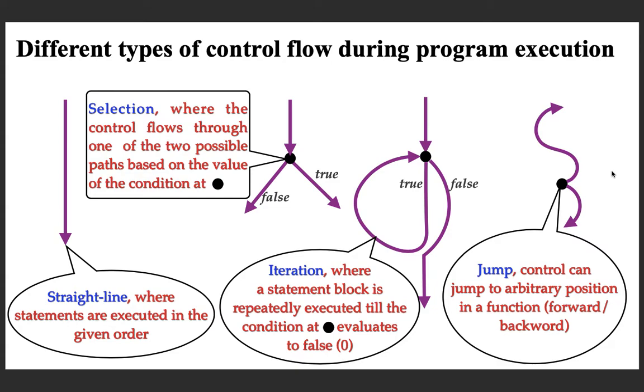Now we are proceeding to the first control statement we are going to learn from the C programming language, which is conditional execution within the selection type of control flow. As the name indicates, the execution of a statement is going to be conditional — that statement will be executed only when a condition evaluates to true. We can try to understand first with an example and later formalize the statement.